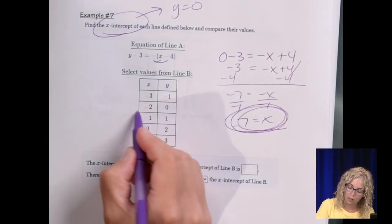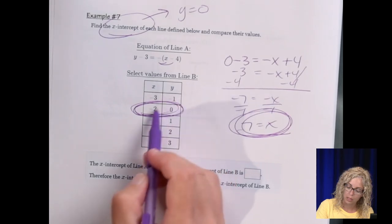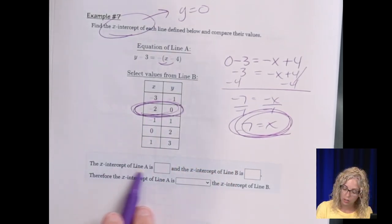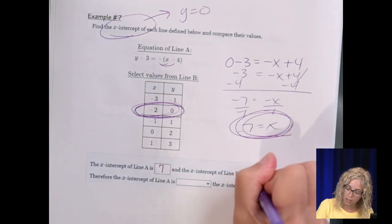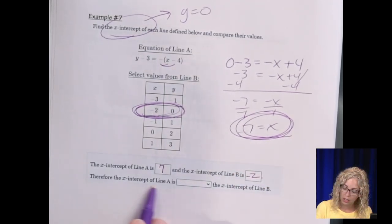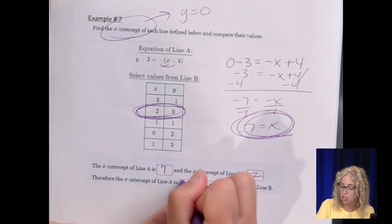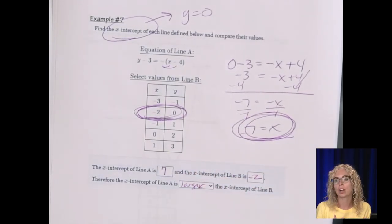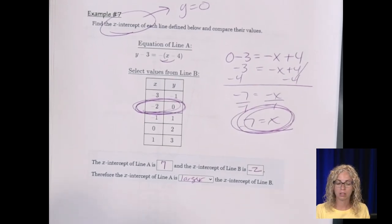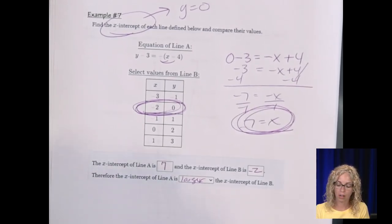Looking here, where Y is 0, our X intercept for line B is negative 2. So the X intercept of line A is 7. The X intercept is negative 2. Therefore, the X intercept of line A is larger. Again, I don't know what that drop-down is. Higher, bigger than that of B. 7 is bigger than negative 2.